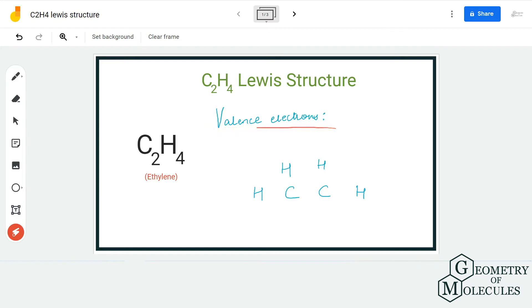Here we have two carbon atoms, which means we have 4 times 2, equals 8 valence electrons from carbon. There are four hydrogen atoms, which means we have 4 valence electrons from hydrogen atoms. In total, we have 12 valence electrons for this molecule.